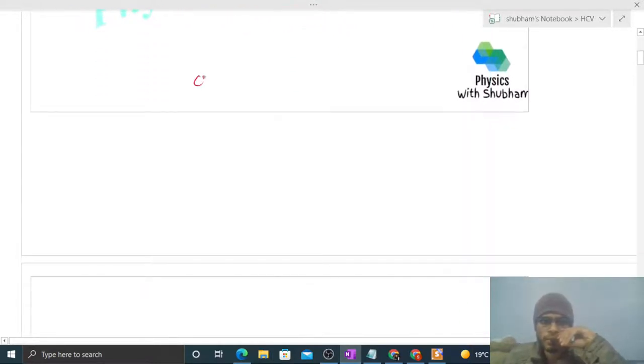For example, when we study capillary tubes, the height of liquid in the capillary tube, let's say h naught, is equal to 2T cos theta naught divided by rho rg. Here theta naught is the actual value of contact angle between the capillary tube and the liquid. Now what will happen if the height of the capillary tube is not sufficient? Let's say the height of the capillary tube is small h.